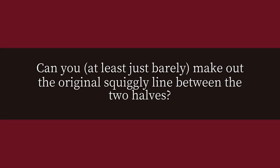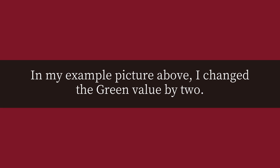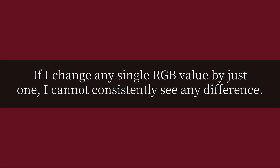Can you, at least just barely, make out the original squiggly line between the two halves? In my example picture above, I changed the green value by 2 — I can just barely make out a difference. If I change any single RGB value by just one, I cannot consistently see any difference.